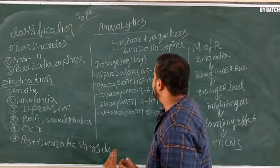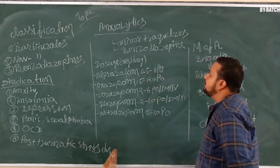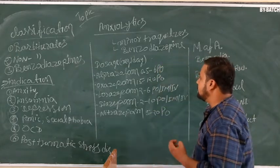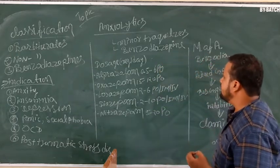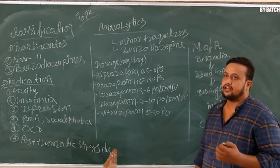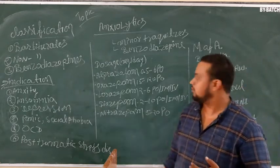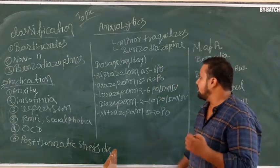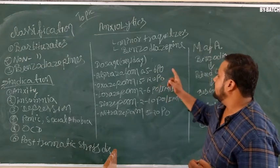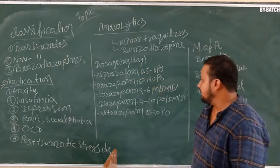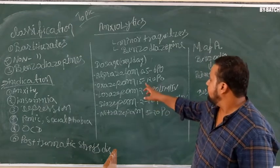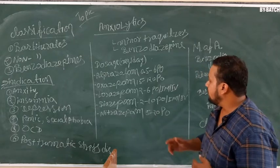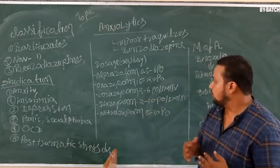Now we are going to discuss the doses of anxiolytic drugs. First, alprazolam: 0.5 mg to 6 mg per day, taken orally — this is the first-choice drug. Then, oxazepam: 15 to 120 mg orally per day. Then, lorazepam: 2 to 6 mg per oral per day.